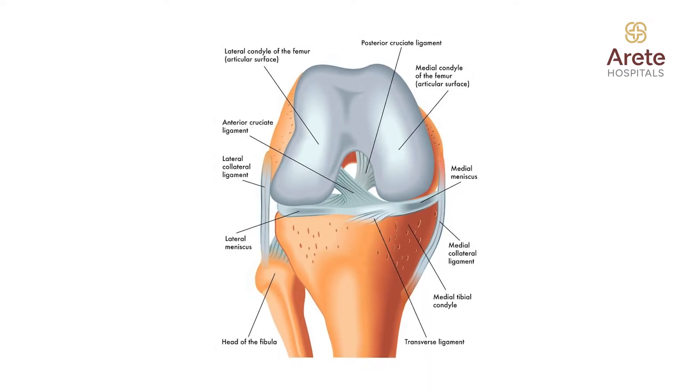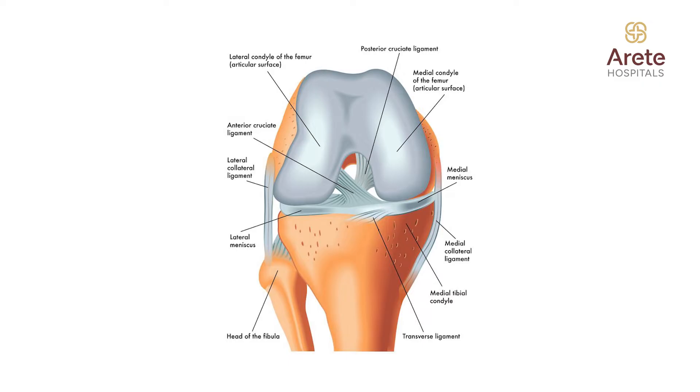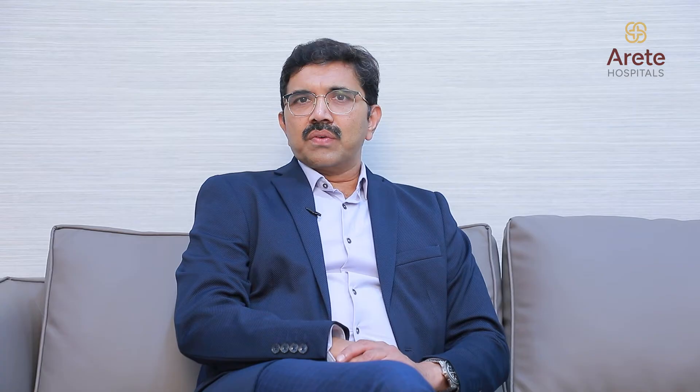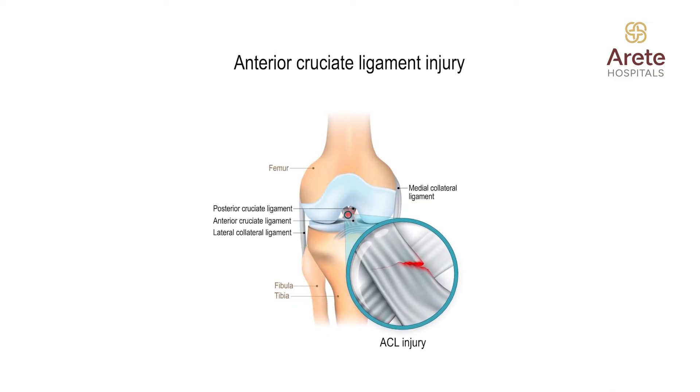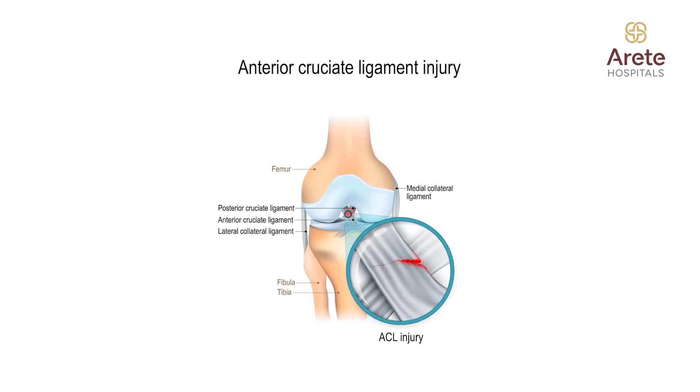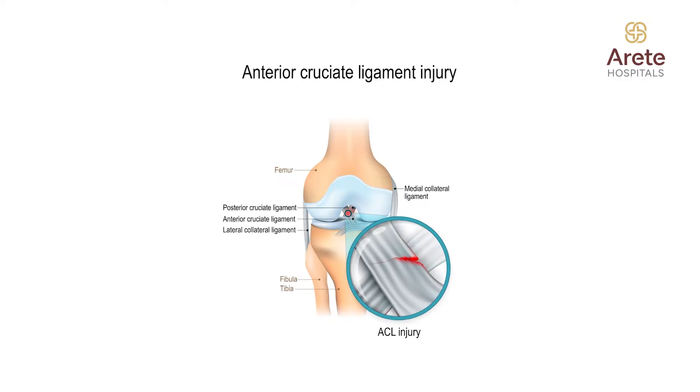The ACL is, as most of you are aware, the main stabilizer of the knee joint. It helps in maintaining your stability and helps in doing your normal day-to-day activities including jogging and playing sports like football, basketball, and volleyball. When this ACL ligament is torn, patients usually have instability of the knee, which can eventually lead to arthritis.